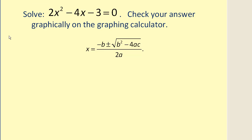Okay. We're going to go ahead and identify our values for a, b, and c. A equals two, b equals negative four, c equals negative three.